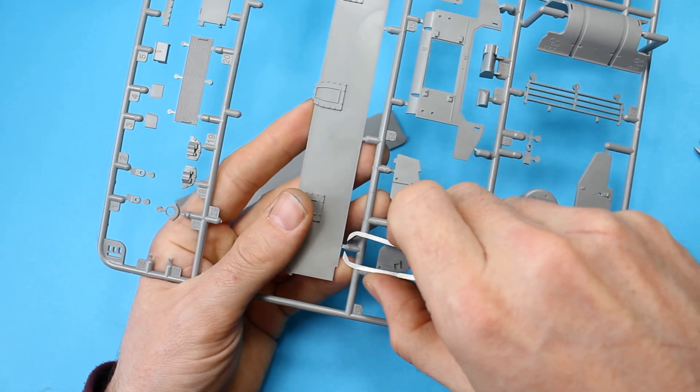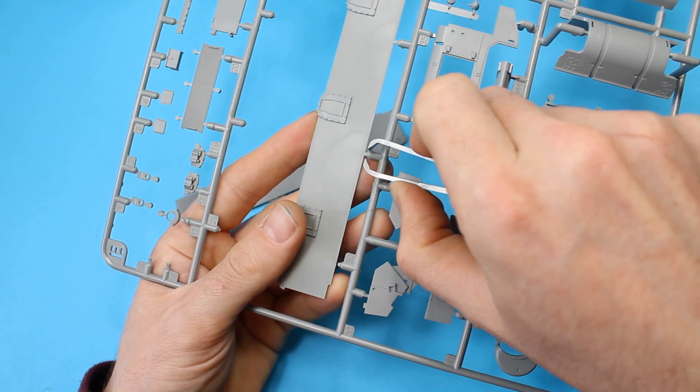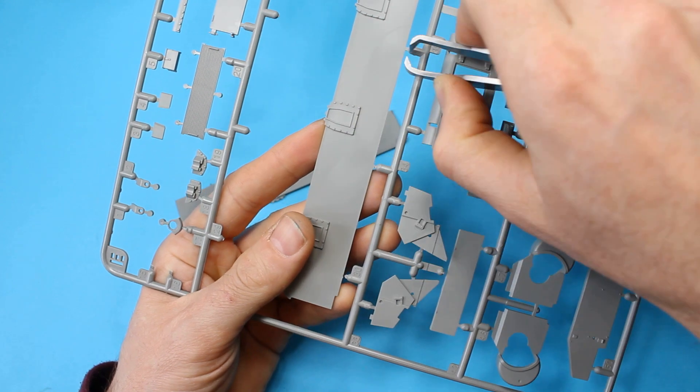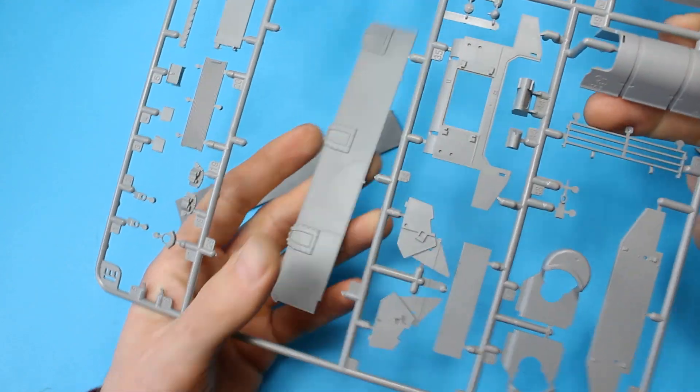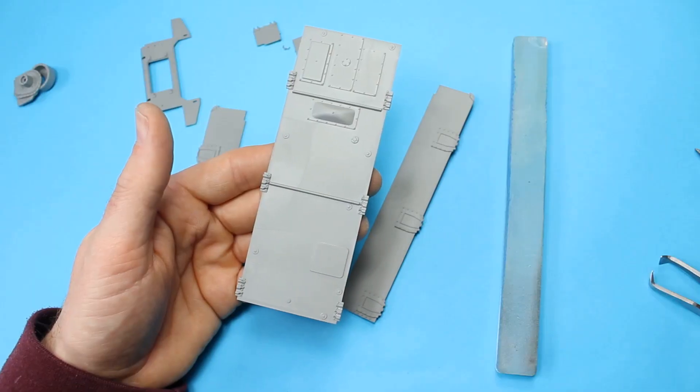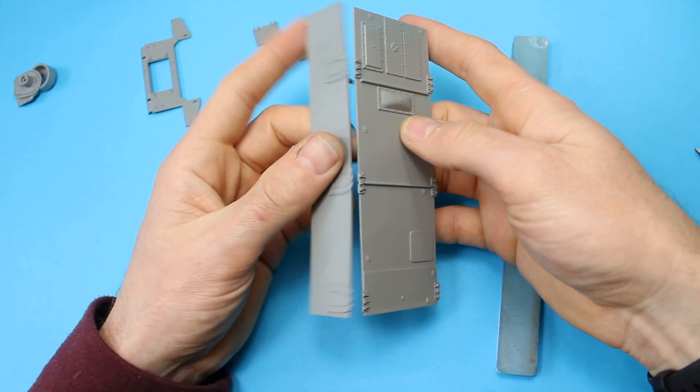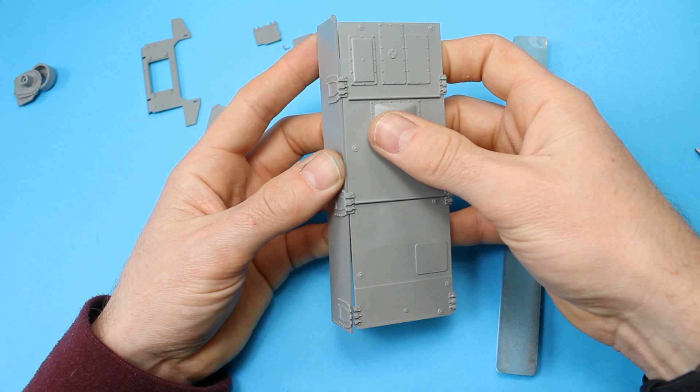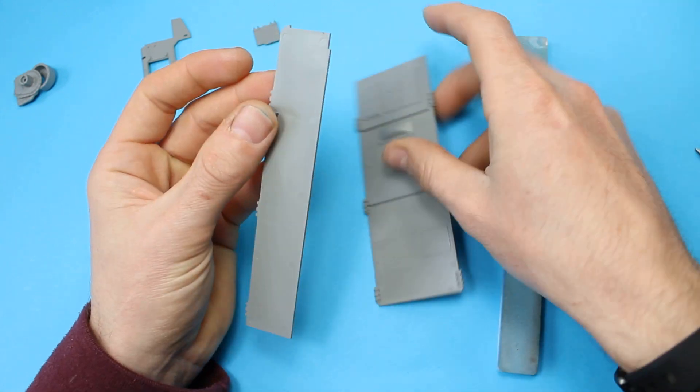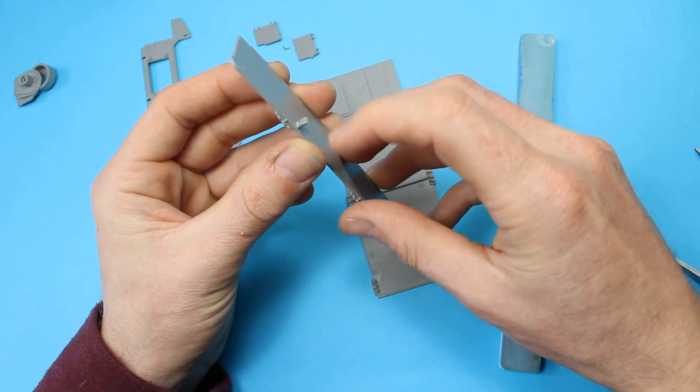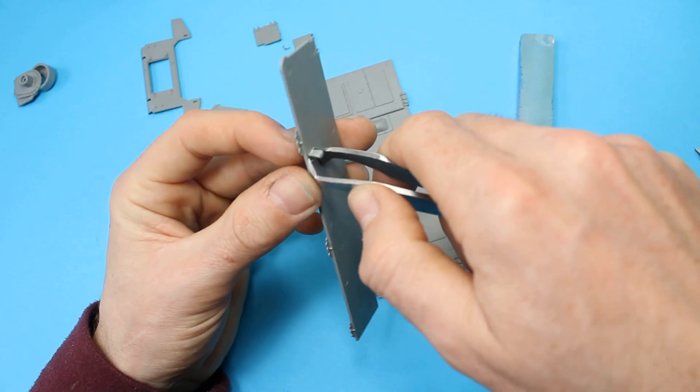So as with most armor kits these days, it's starting with creating the bathtub hull. It's the bathtub style of hull and lower hull, and you have to actually construct that yourself. I imagine they've done it like this to try and get a bit more detail in, but it's a bit of a silly way to go about it, if you ask me.